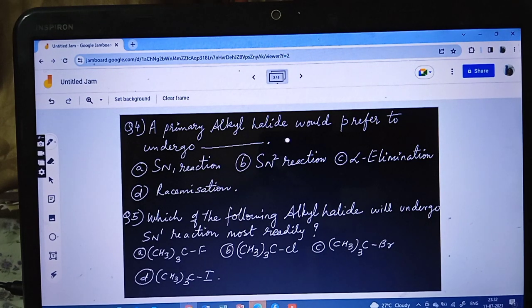Question number 4. A primary alkyl halide would prefer to undergo? Options are: SN1, SN2, alpha elimination and racemization. We know for SN1 the order should be 3 degree. That means 3 degree alkyl halide should be there. So SN1 nahi hoga. And then SN2, yes. SN2 me order is 1 degree > 2 degree > 3 degree. That means primary alkyl halide will undergo SN2 mechanism. So option B is the correct answer.